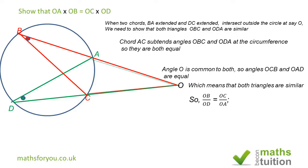Since the triangles are similar, OB which faces angle C divided by OD which faces angle A equals OC which faces angle B divided by OA which faces angle D. When you cross-multiply, you get that OA times OB is equal to OC times OD, which is what we were supposed to show.